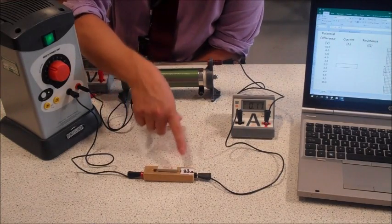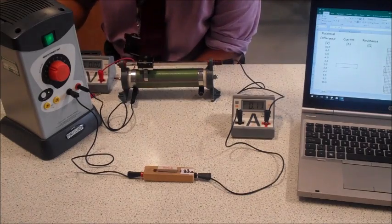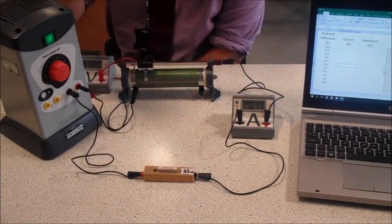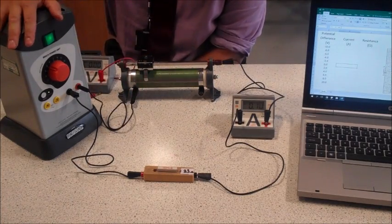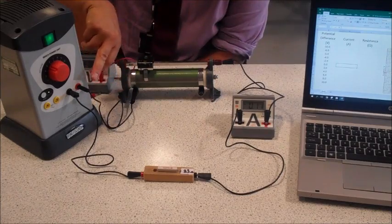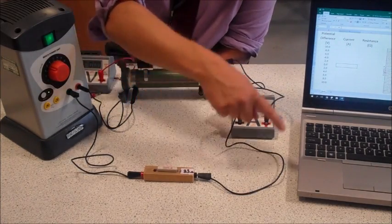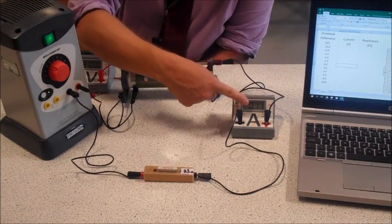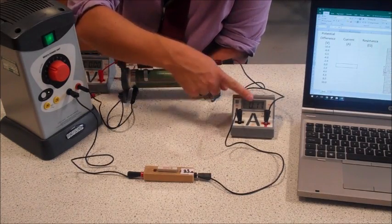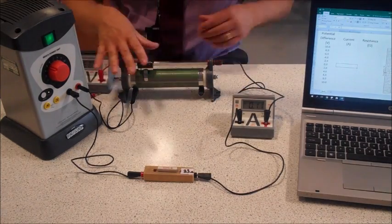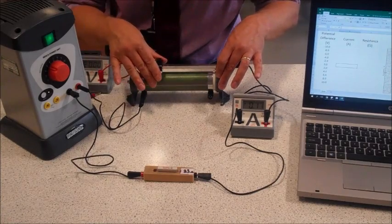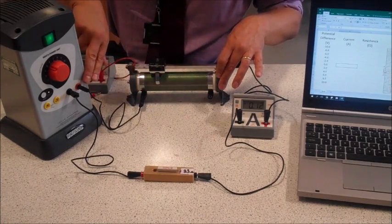So hopefully you can see this is a 33 ohm resistor and we've got it in a really simple circuit which I have built. We've got a power supply here and I'm using direct current, so I've come out of the power supply into the resistor, from the resistor into an ammeter which you should be able to see the readings, and from the ammeter into a variable resistor or a rheostat, and then back to the power supply.